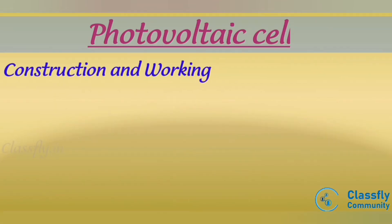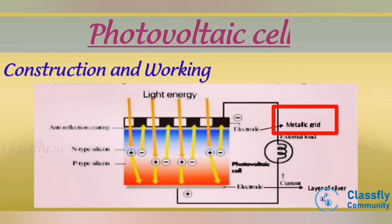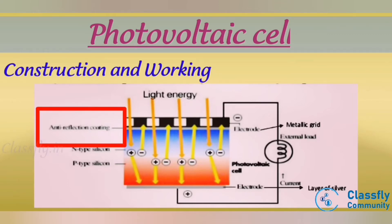Moving on to the construction and working of the photovoltaic cell. A typical silicon photovoltaic cell consists of a P and N junction made of silicon. It consists of two electrical contacts, one of which is in the form of a metallic grid and allows light to fall on the semiconductor between the grid lines. The cell's other electrical contact is formed by a metallic layer on the back of the solar cell. The anti-reflective layer avoids the reflection of light.